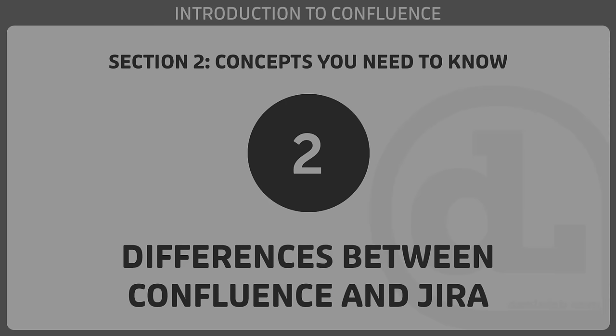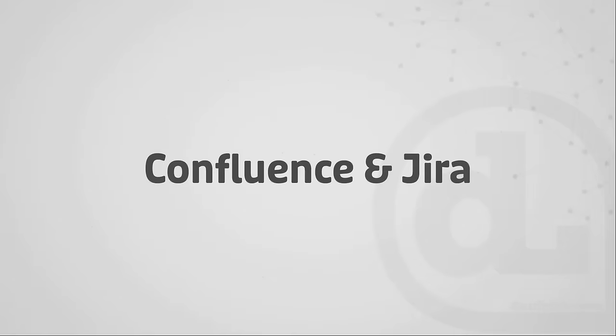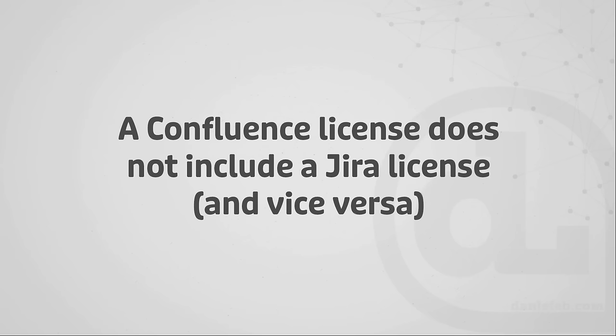In my experience, it's easy for users who are new to Confluence to confuse it with Atlassian's most popular product, Jira. So in this video, we'll take a quick look at how Confluence and Jira are different. The first thing to keep in mind is that Confluence and Jira are separate licenses. That means it's possible to have a license to Confluence without Jira, and it's also possible to have a license to Jira without Confluence.